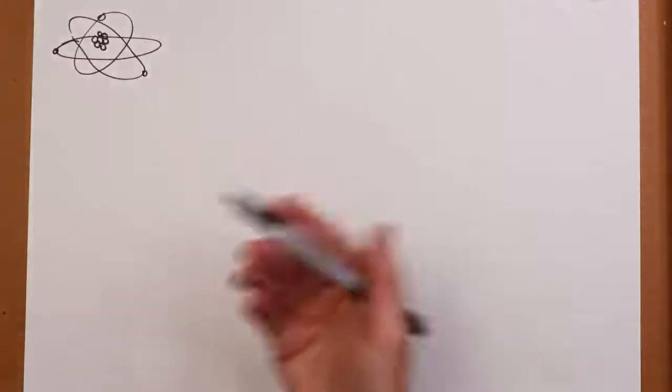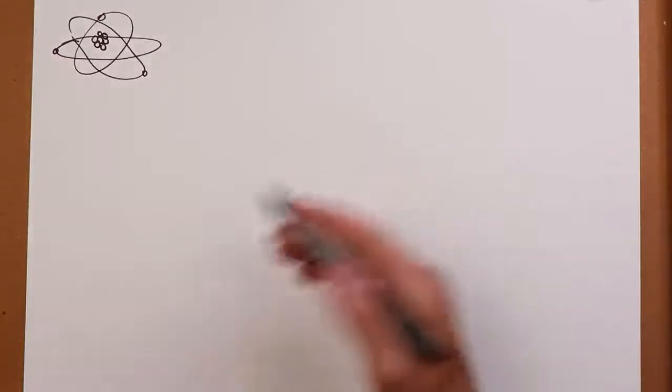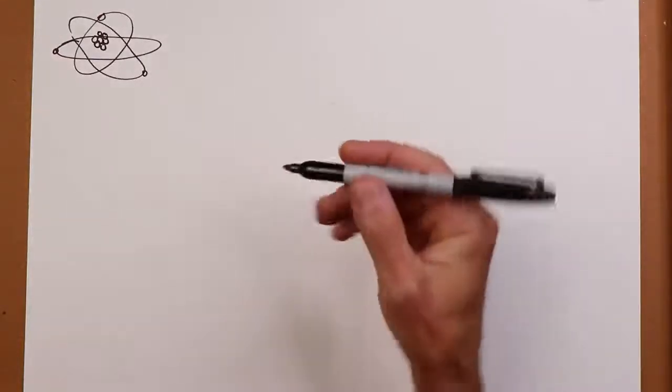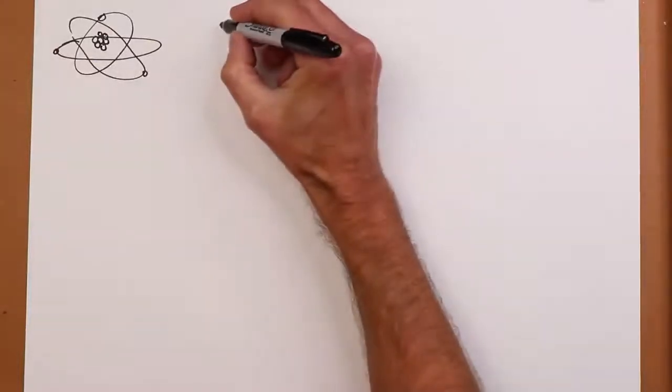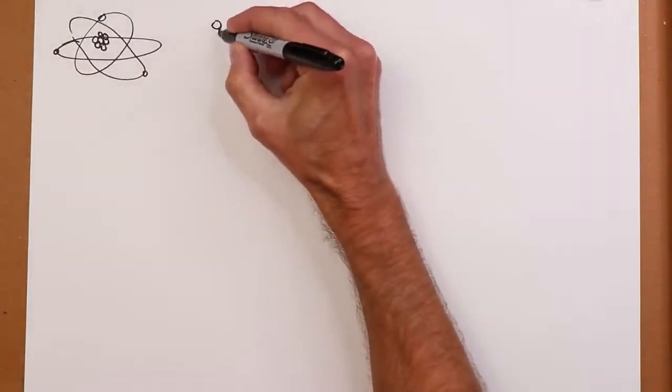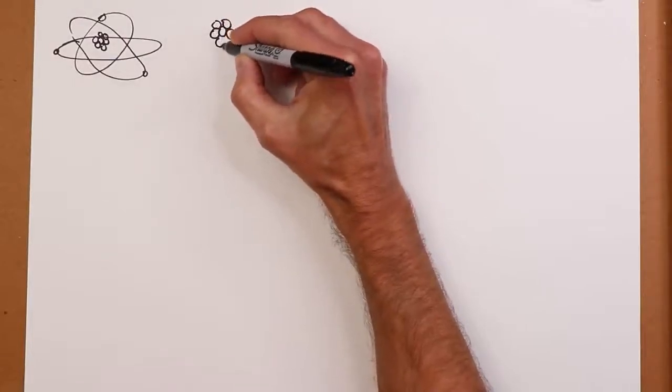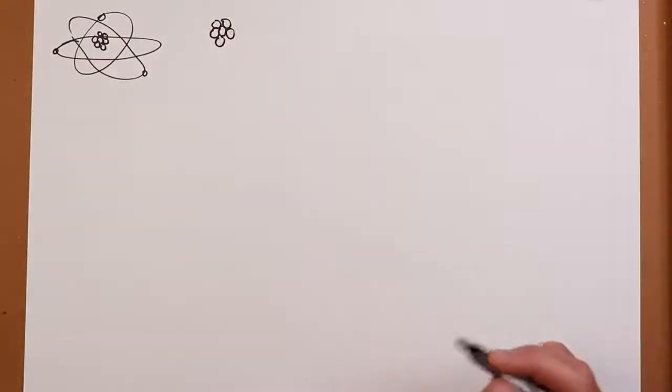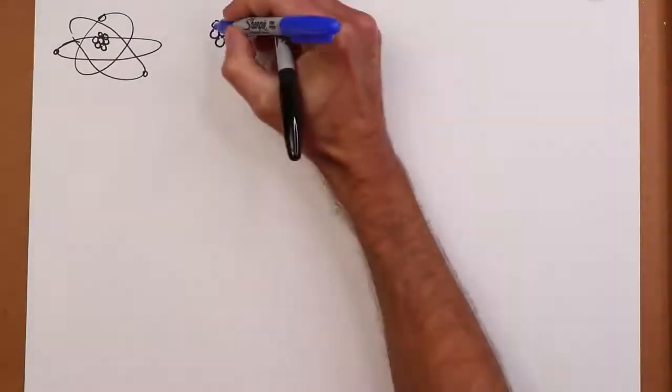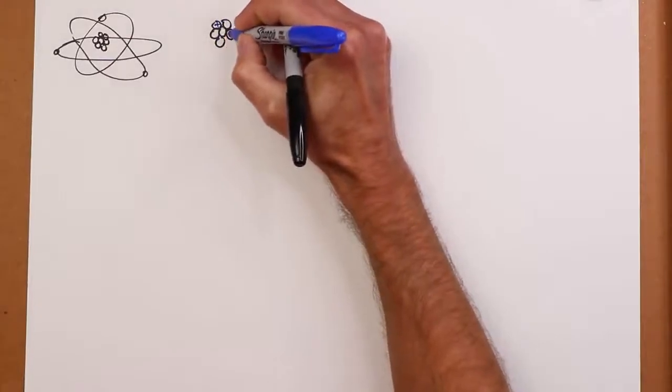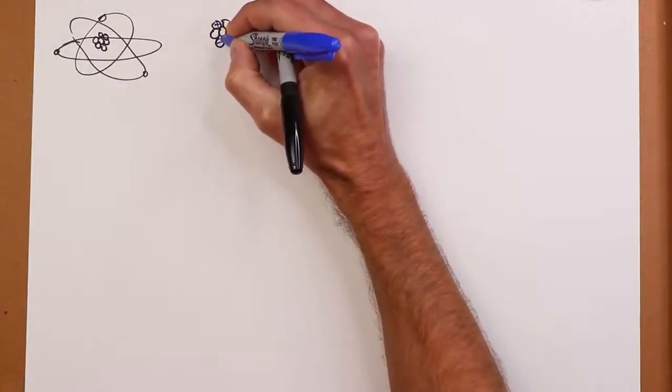Well, what do we actually have as far as a model is concerned? Well, certainly we do have protons and neutrons. So I'll just draw a couple little dots here. And what we know is that the protons have a positive charge and the neutrons have no charge.